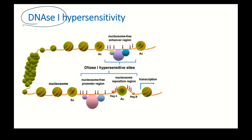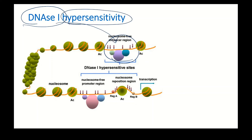DNase I breaks the phosphodiester bond between nucleotides. Whenever DNA is protected by histone proteins, DNase I cannot cut because the DNA is protected. Euchromatin regions are cleaved by DNase I — these regions are known as DNase I hypersensitive regions. DNase I hypersensitive regions are the regions of chromatin which are constitutively and continuously expressed.